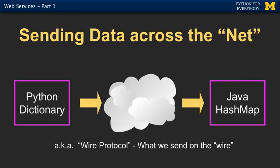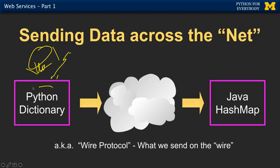The basic idea is you have data in a program. We have two programs here and they're going to communicate across the internet. We might have a Python program that's producing the data — maybe it's reading a database, maybe it's reading a file. Inside it has a Python data structure, like a dictionary. And we want to send that across the network. The network is not Python, the network is not Java.